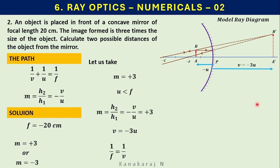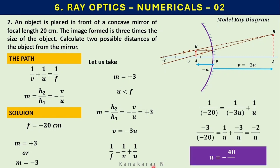1/f equals, in the place of v let us substitute minus 3u, and in the place of f let us substitute minus 20. Doing a simple mathematical step, we find u equals minus 40/3 centimeter.